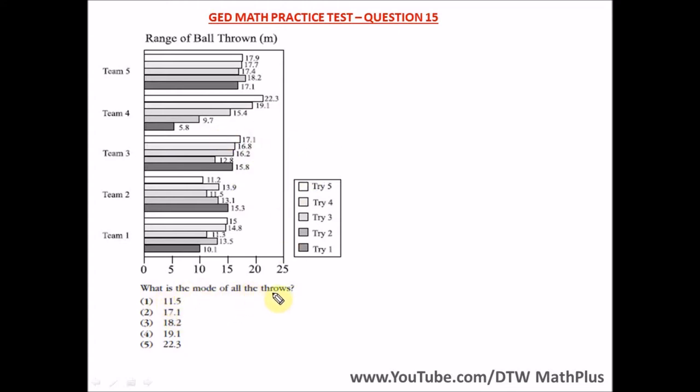It says what is the mode of all the throws? In statistics, what's the definition of mode? The definition of mode is the most frequently occurring number, the length that occurred more than once, the most frequently occurring number is the mode.